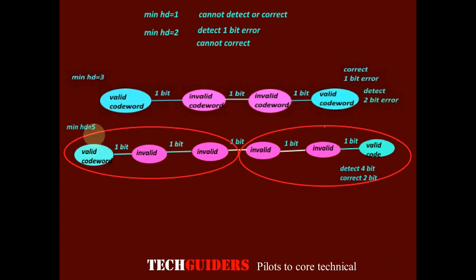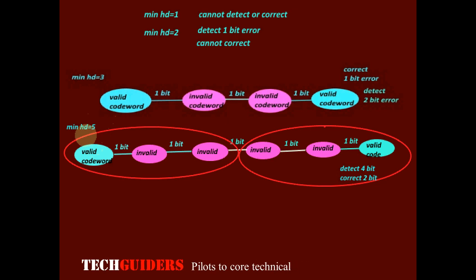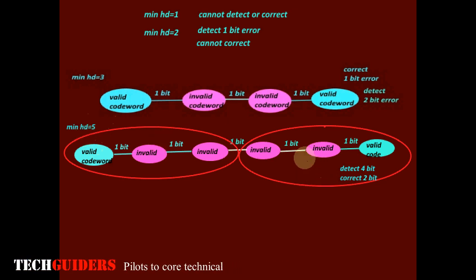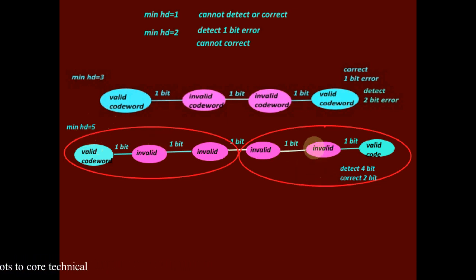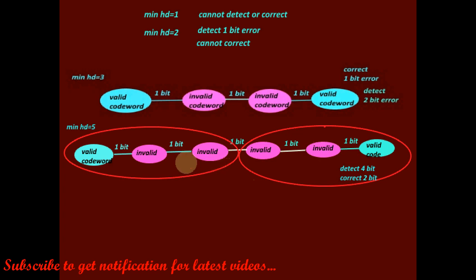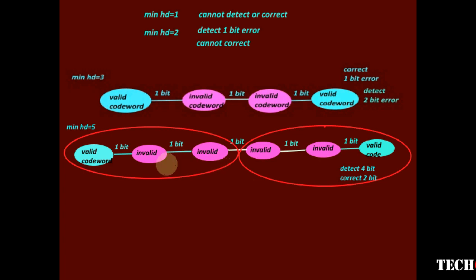Thus, if the minimum Hamming distance is 5, we can detect up to 4-bit errors — 4-bit, 3-bit, 2-bit, as well as 1-bit errors — and we can correct up to 2-bit errors.